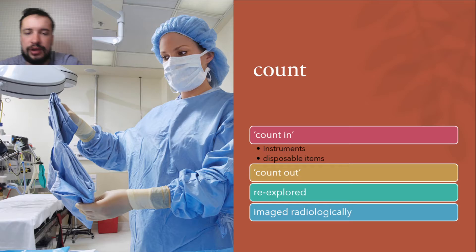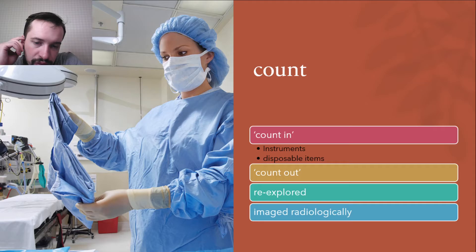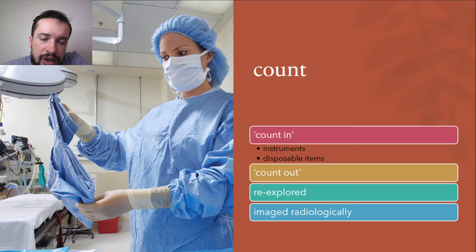It is important that interruptions be minimized during the counting process, as this is one of the key safety checks of all operative procedures. The numbers must match in all categories. An incorrect count at the conclusion of the operation warns the team that an object from the scrub nurse's original count may still be in the patient. This must necessitate a recount and a search of the operative field and surrounds. If the count is still not correct, the patient must be either re-explored or imaged radiologically to exclude the possibility of a retained instrument or device before leaving the theater.